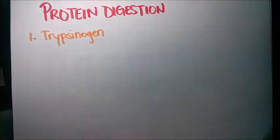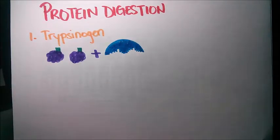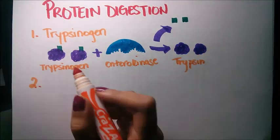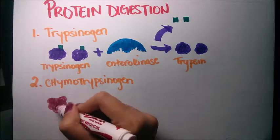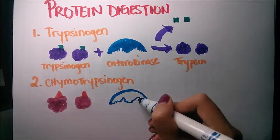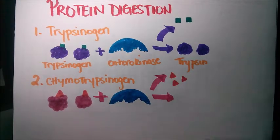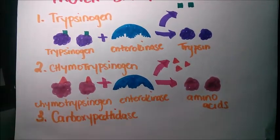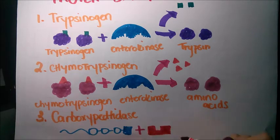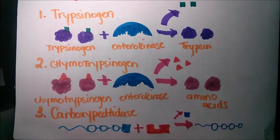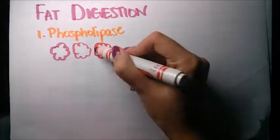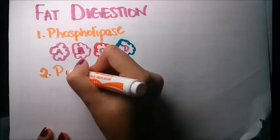For protein digestion, trypsinogen, which is an inactive protease, is produced by the pancreas. This is converted into its active form in the duodenum and breaks down proteins into basic amino acids. Chymotrypsinogen is also converted into its active form by duodenal enterokinase and breaks down proteins to their aromatic amino acids. Carboxypeptidase is a protease which takes off the terminal amino acid group from the protein.